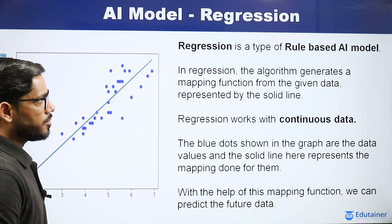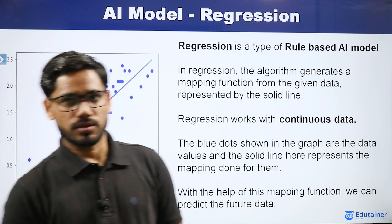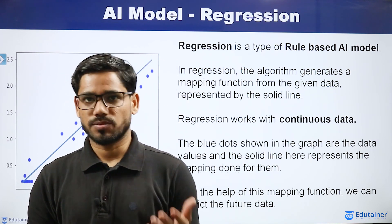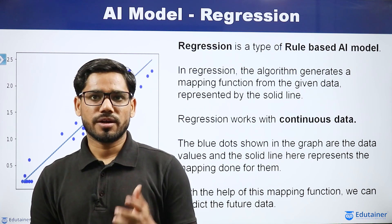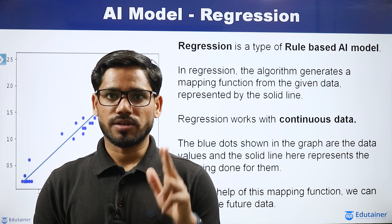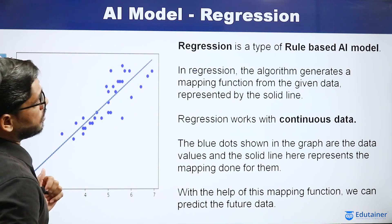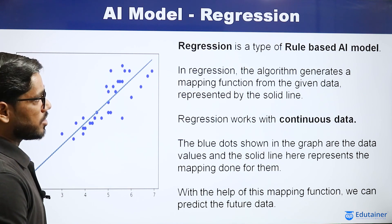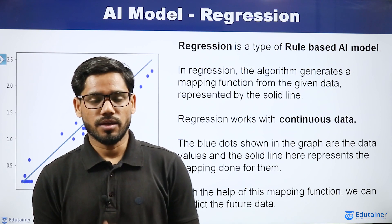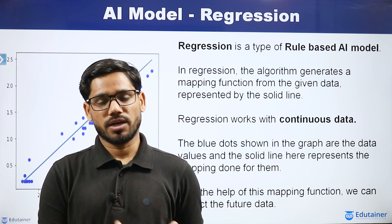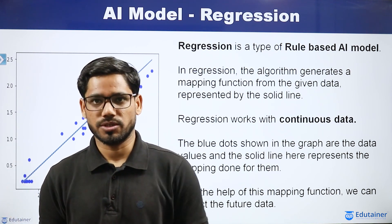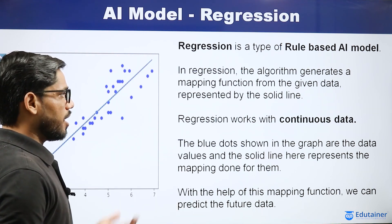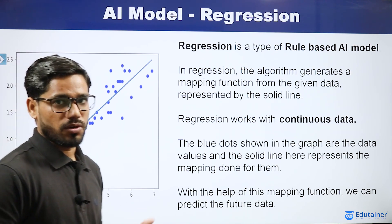Before discussing the neural network concept, let's discuss in depth what we have studied in previous videos regarding artificial intelligence models and machine learning models. Machine learning models have three main types: classification, regression, and the clustering model.